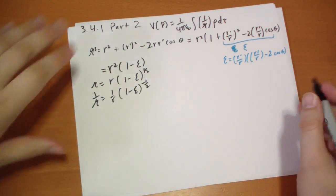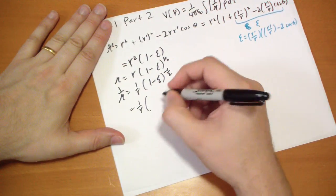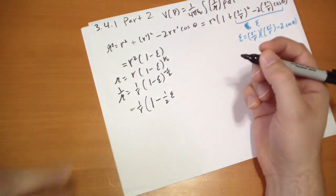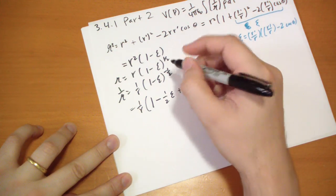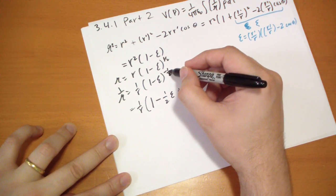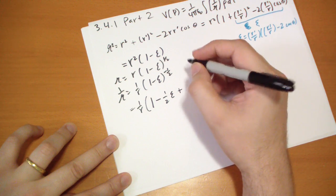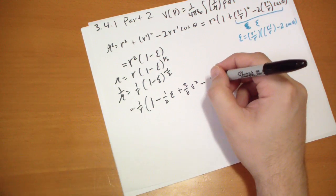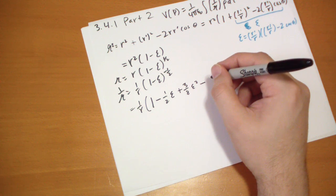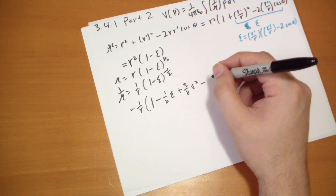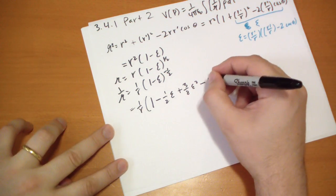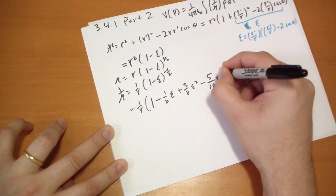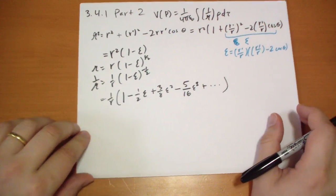Now we apply the polynomial expansion. This is equal to 1 over r times (1 minus 1/2 epsilon plus 3/8 epsilon squared minus 5/16 epsilon cubed). And then there's other terms as well, but we're not interested in those right now. We're going to find a pattern and then solve it.